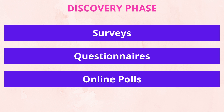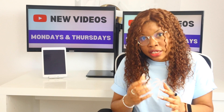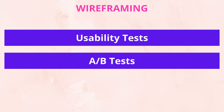In the discovery and early stages of a project, for example, you might want to conduct quantitative research — start with surveys, questionnaires, and online polls to get large data sets that you can analyze and draw patterns from. Then in the definition phase, you might want to conduct user interviews and contextual inquiries to gather more detailed and specific information on the identified problems or patterns. Then as you progress into developing wireframes, you might want to consider some sort of usability test or A/B test with real or intended users.